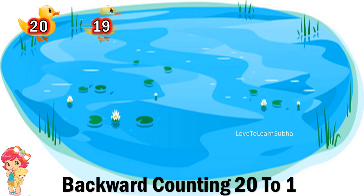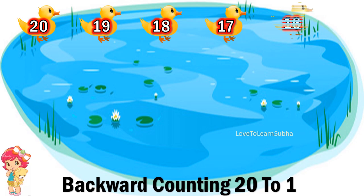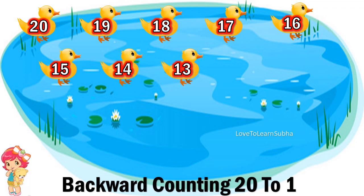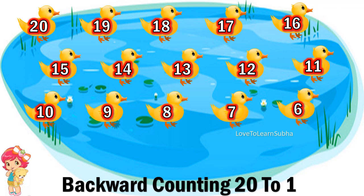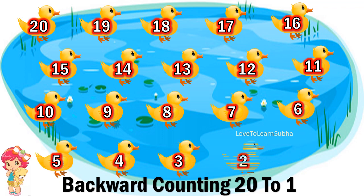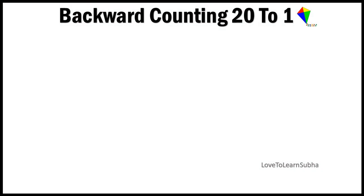20, 19, 18, 17, 16, 15, 14, 13, 12, 11, 10, 9, 8, 7, 6, 5, 4, 3, 2, 1. Now let us do the backward counting from 20 to 1 with the help of kites.